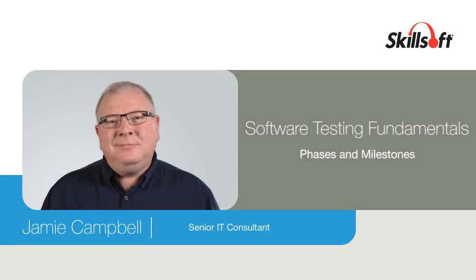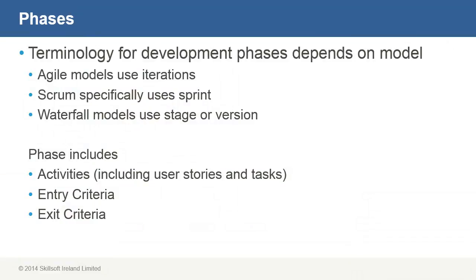When we talk about software development, we're really talking about a process that's comprised of a series of phases or stages. Activities in the various phases tend to vary depending on the development model used. Generally, phases are connected to milestones that define a project's progress as well as its stated goals. In this video, I'll discuss the phases for the Agile and Waterfall development models, I'll define activities in terms of software development, and I'll also explain external and internal milestones.